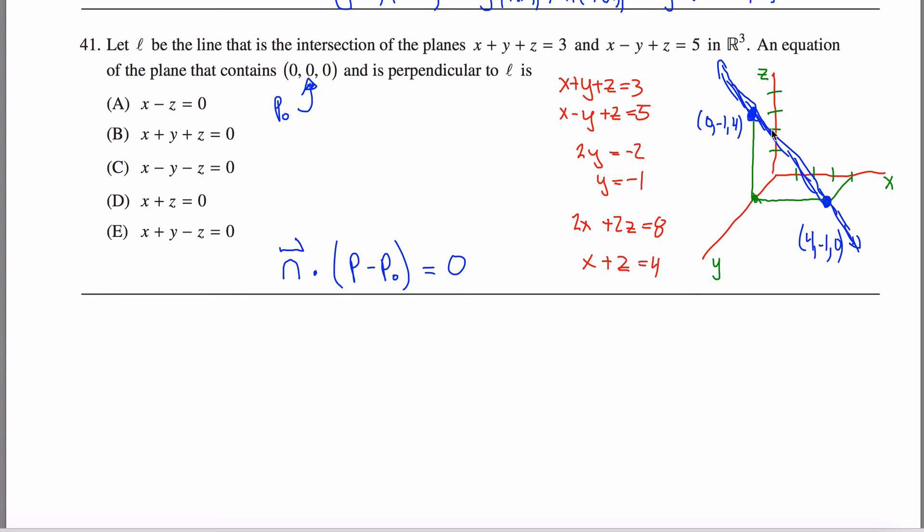So I can come up with a vector that represents the direction of this line by subtracting these two points. If I take, I don't know, down here, I guess, four, negative one, zero, and subtract zero, negative one, four, oh, let's see, four minus zero is four. Negative one minus one is zero. Negative one minus negative one is zero. And zero minus four is negative four.